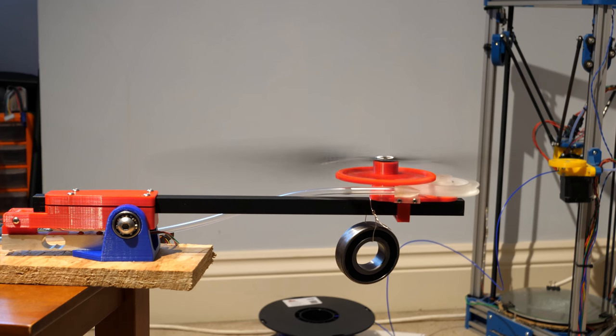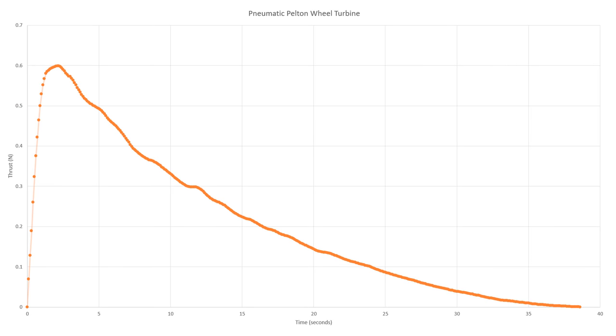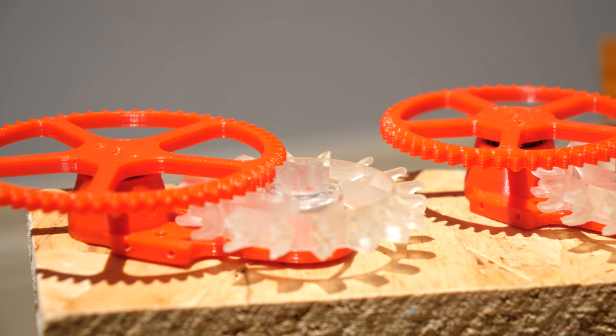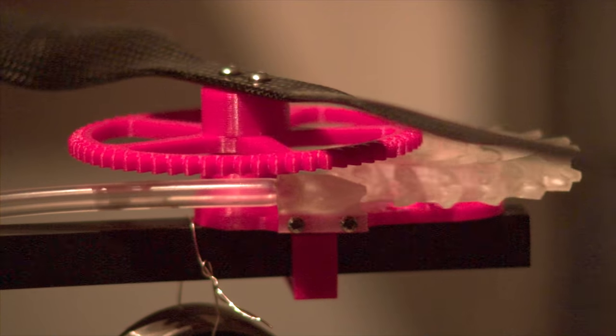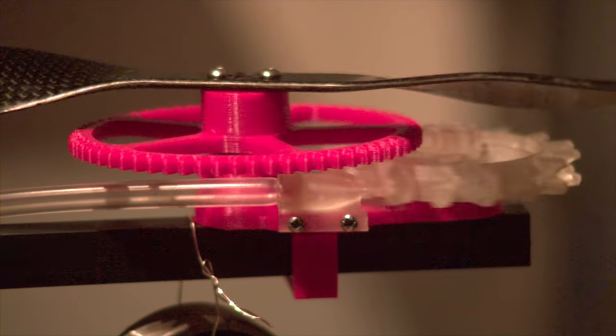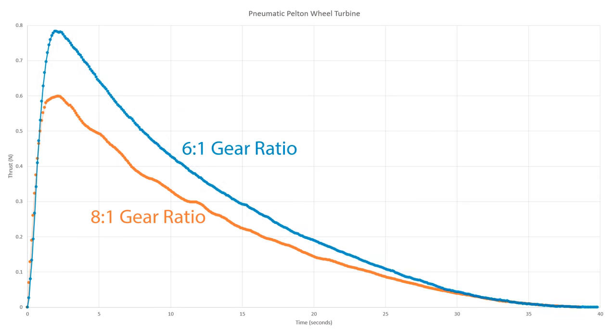With 4 bar in the plastic bottle, the turbine and propeller combo produced a peak thrust of 0.6 newtons which gradually reduced over a time period of 35 seconds. I then tried reducing the gear ratio to see if it would use some of that extra torque to increase the propeller rpm, which it did. This produced 0.78 newtons of thrust, meaning a 30 percent increase in performance just by changing the gears. But why is this?